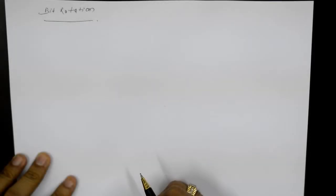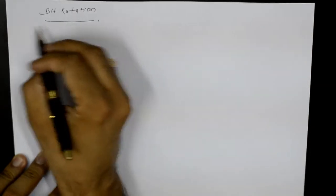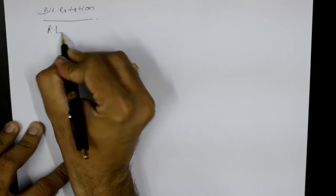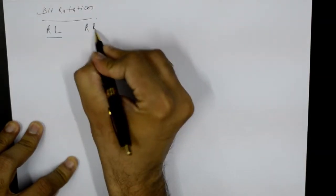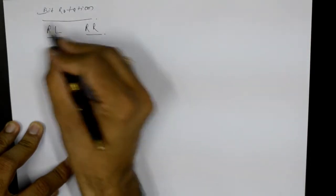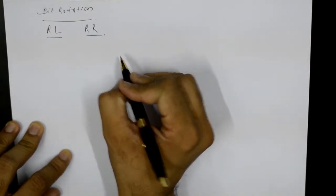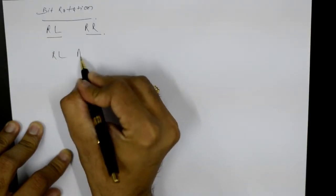Now we will understand how we can achieve bit rotation in assembly language using the 8051 microcontroller. There are two instructions we are going to use: one is RL, which is rotate left, and one is RR, that is rotate right. Both of these instructions operate on the accumulator, so if I write something like RL A...